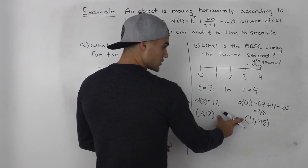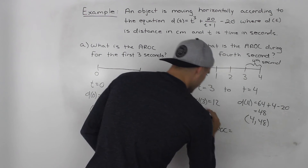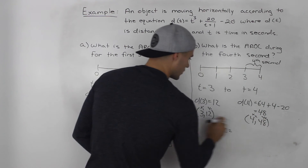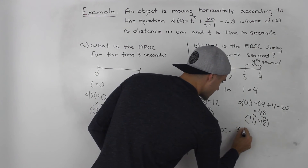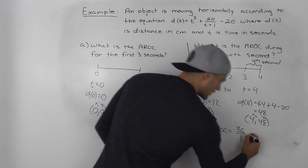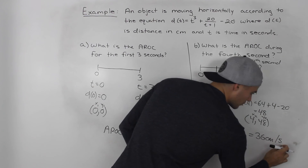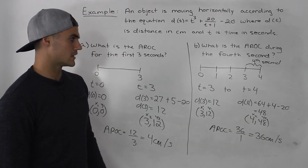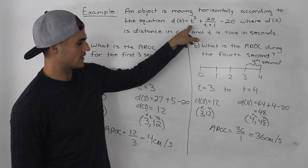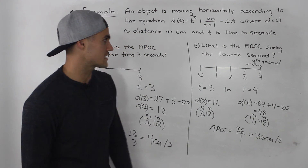Now we find the average rate of change between (3, 12) and (4, 48). Labeling (x1, y1) and (x2, y2): (48 - 12) / (4 - 3) = 36 / 1 = 36 centimeters per second. So during the fourth second, the average rate of change for this object is 36 centimeters per second.